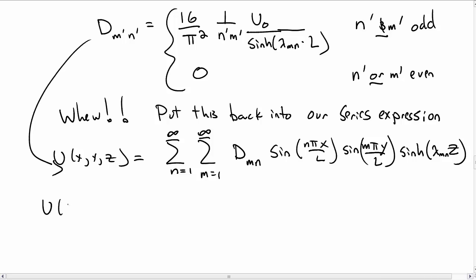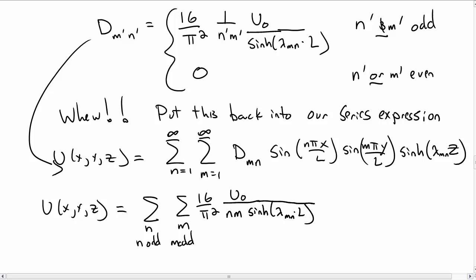Now we have our sum is the sum over n, the odd n values, and sum over odd m values, and we have 16/π²·u_0/(nm·sinh(λ_mn·L)), and then we have our sine functions: sin(nπx/L)sin(mπy/L)sinh(λ_mn·z).